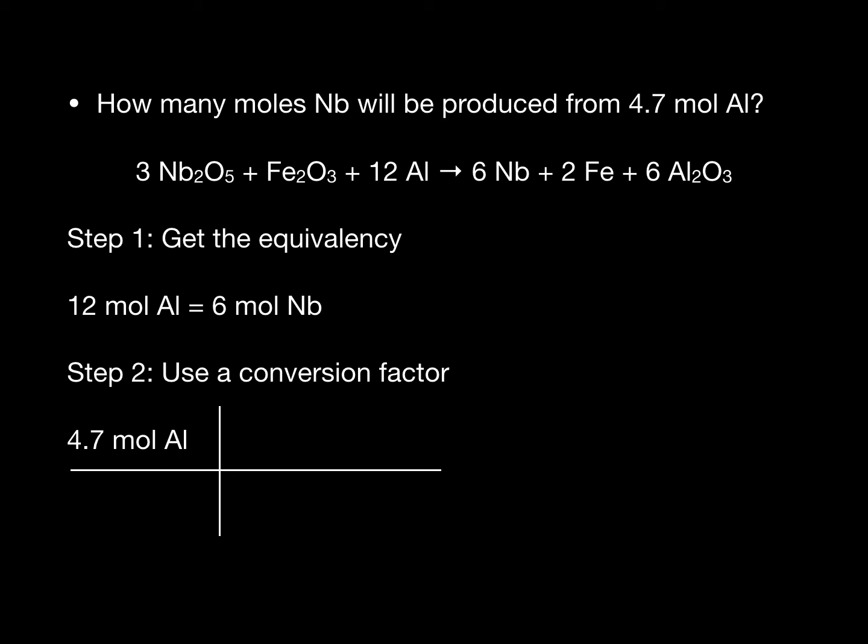So this is the starting quantity and the units given to us in the word problem: 4.7 moles of aluminum. Next we want to position 12 moles of aluminum on the denominator and 6 moles of niobium on the numerator.